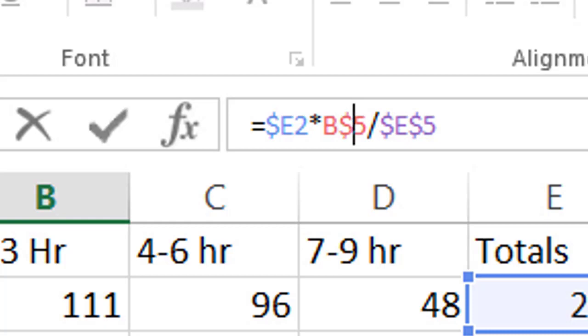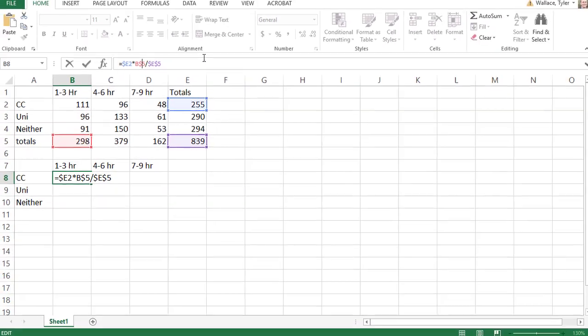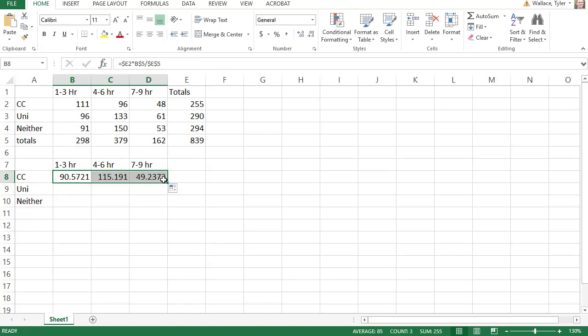Those dollar signs are going to allow me to drag my formula across by clicking the dot in the bottom right and down. And now I've got my expected values for each of the categories that I could then compare to my observed values from the sample, and we'd be ready to conduct our hypothesis test.